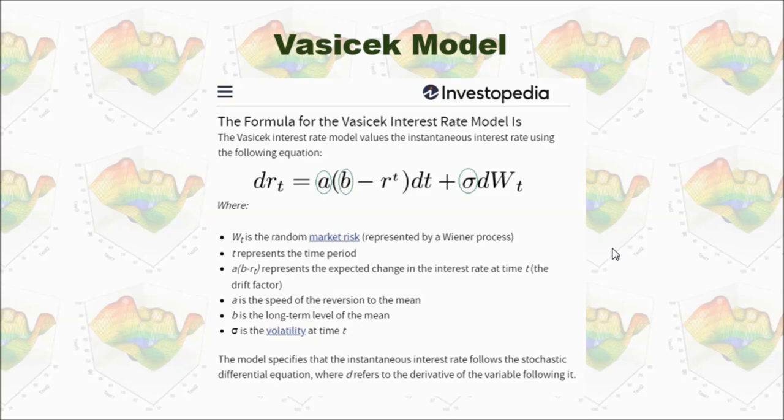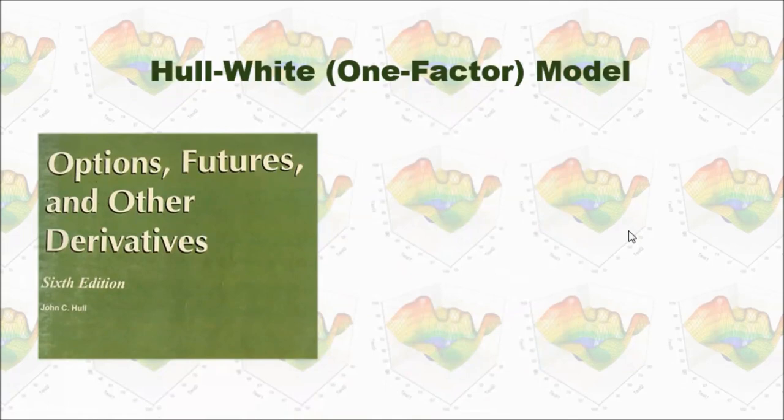In my previous video, I showed you the Vasicek model. Let's review it. There are three parameters in the Vasicek model: A is the speed of the reversion to the mean, B is the long-term level of the mean, and sigma is the volatility at time t. All three parameters are constant in the Vasicek model.